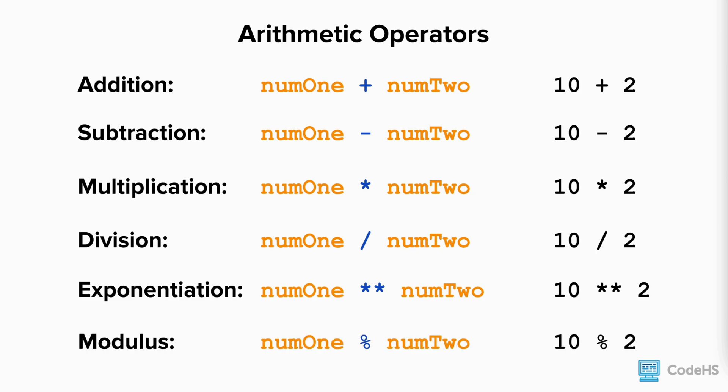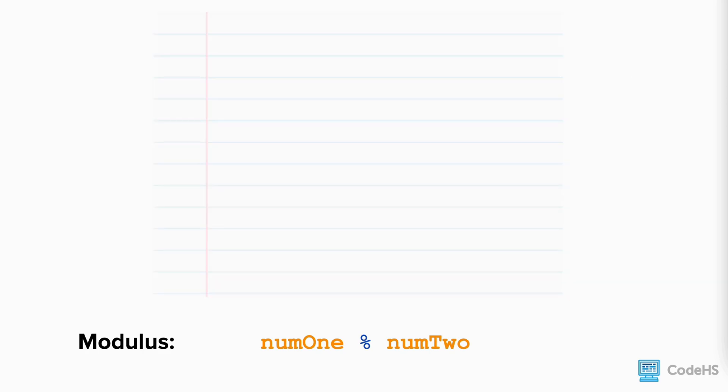For modulus, we use a percent sign. Modulus returns the remainder of dividing two numbers. For example, 17 modulus or mod 5 is equal to 2. Why? 5 fits into 17 three times, but there is 2 left over. Modulus returns the remainder, so the answer is 2.